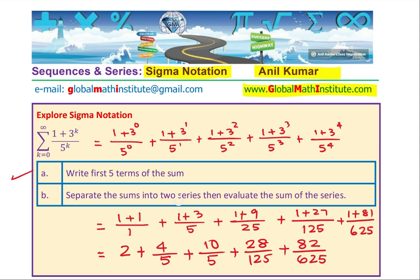Now in second part, we will actually split this series into 2. As you can see, we could write this as 1 over 5 to the power of k and 3 to the power of k over 5 to the power of k. And then it will be easier for us to find the sum of this series.